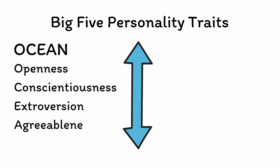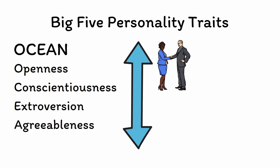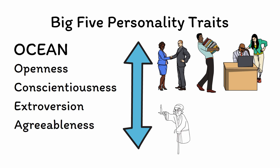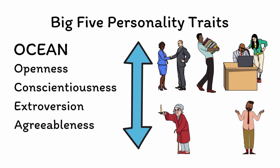Next, A is for Agreeableness. Agreeableness refers to the priority that one places on getting along with other people. Those with high agreeableness are seen as helpful, kind, and trustworthy, and tend to put others' interests ahead of their own, though they may be prone to peer pressure and groupthink as a result. In contrast, people who score low on agreeableness are less interested in social harmony, and will put forth less time and effort into helping others, and may even view others' motives with skepticism.